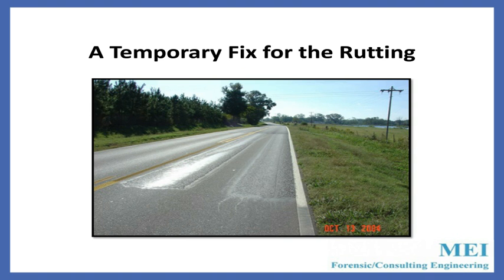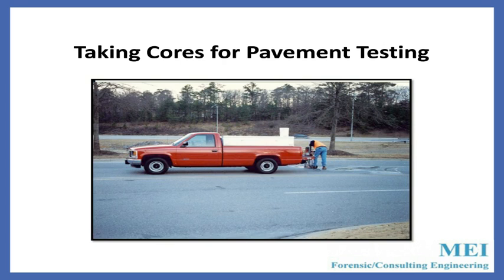Here's a temporary fix for a rutting situation. You can see where the local DOT — could have been city, county, or state — put in a patch to keep water from collecting in the rut. Now, one of the most important things you can do when you have a roadway case and you suspect the road was contributory to the accident is that you must test the road. This gentleman is collecting the cores. If you have an asphalt rutting situation, you need to find out whether it was too much or too little asphalt. The only way to do that is to physically go out and take cores in the road.